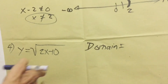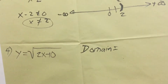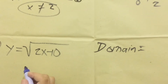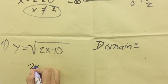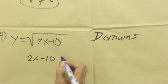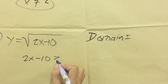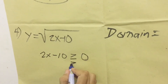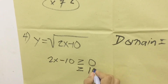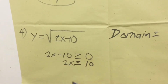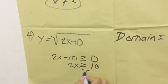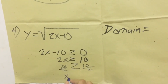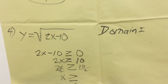There is a radical sign, and this is called the radicand. Make sure the radicand does not give a negative result. So we take the radicand 2x and use the condition: 2x minus 10 greater than or equal to 0. Transposing, 2x is greater than or equal to 10. Dividing both sides by 2, x is greater than or equal to 5.